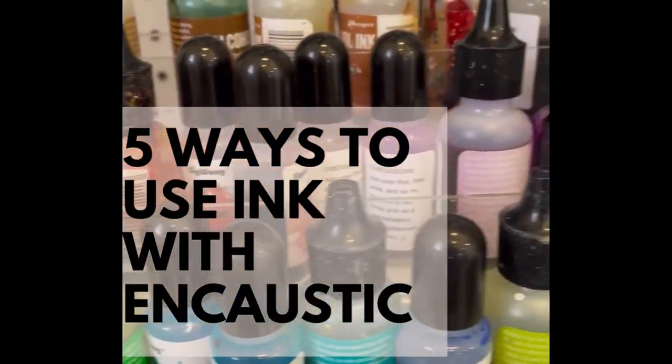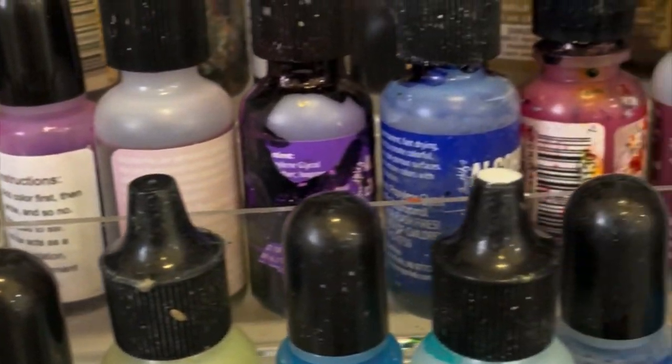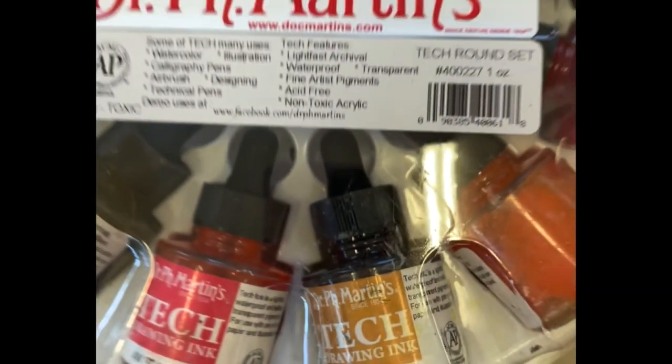Today I'm talking about five ways to use alcohol ink with encaustic. There are two kinds: one is dye-based alcohol ink and the other is pigmented ink which is more archival.